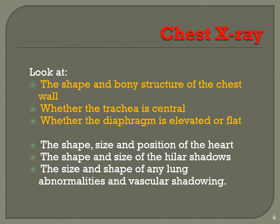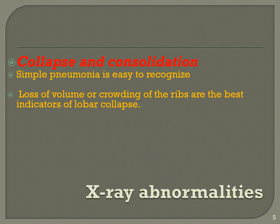On chest x-ray, you look at the shape and bony structure of the chest wall, whether the trachea is central, whether the diaphragm is elevated or flat, shape and size of the heart, hilar shadows, lung pathology, and vascular shadowing. Collapse of a lung lobe and consolidation are common findings. Simple pneumonia is very easily diagnosed on chest x-ray. Loss of volume and crowding of ribs are the best indicators of lobar collapse.